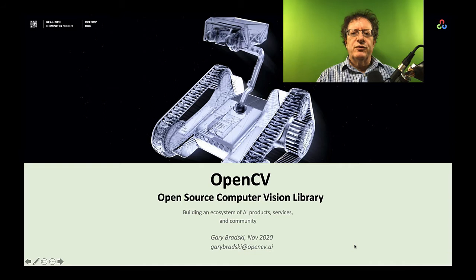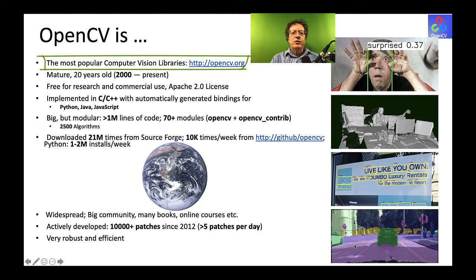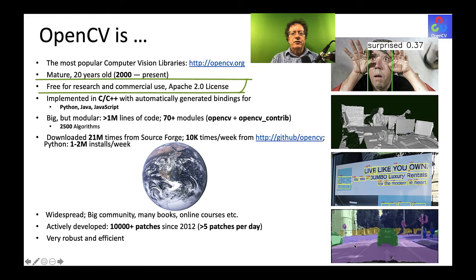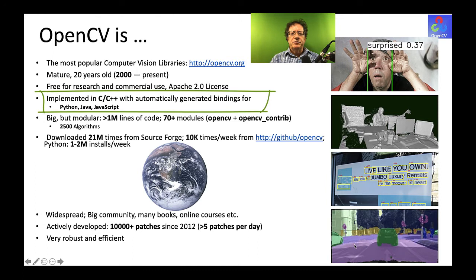What is OpenCV? It's the most popular computer vision library in the world. It's mature — it's over 20 years old. It's free for research and commercial use, with an Apache 2.0 license. It's implemented in C++ but has interfaces in many languages, including Python, Java, and JavaScript.